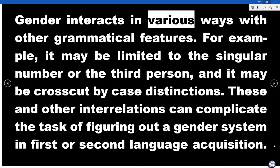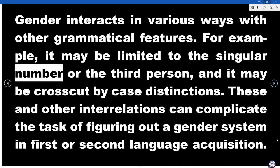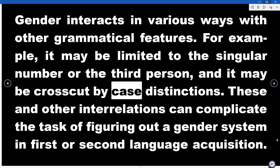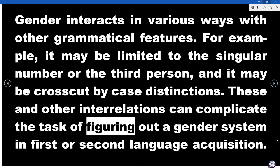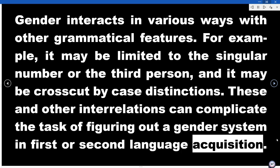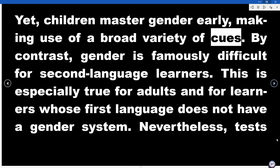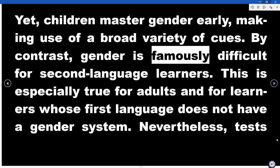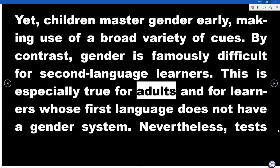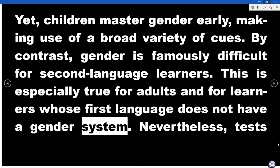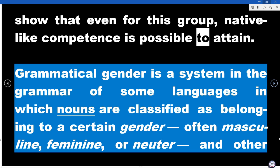Since agreement is a definitional property, gender is generally absent in isolating languages as well as in young languages with little bound morphology, including sign languages. Therefore, gender is considered a mature phenomenon in language. Gender interacts in various ways with other grammatical features — for example, it may be limited to the singular number or the third person, and it may be crosscut by case distinctions. These and other interrelations can complicate the task of figuring out a gender system in first or second language acquisition. Yet children master gender early, making use of a broad variety of cues. By contrast, gender is famously difficult for second language learners — especially for adults and for learners whose first language does not have a gender system — though tests show that even for this group, native-like competence is possible to attain.